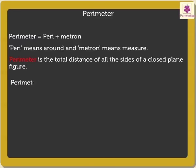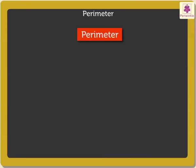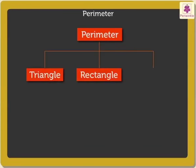Hence, it is found by adding the lengths of all the sides of a closed plane figure. Today, we will learn how to find the perimeter of the polygons triangle, rectangle, and square using formulas.